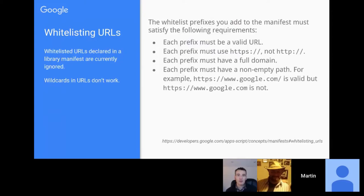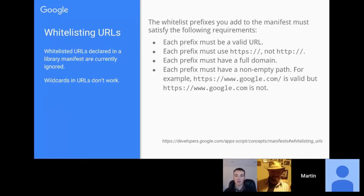In terms of the URL format, there's no wildcard usage — you specify a prefix and URL fetch will allow anything with that prefix up to the path. If you've got something on different subdomains you need to specify each subdomain separately. All whitelisting URLs must be HTTPS — over a secure connection.